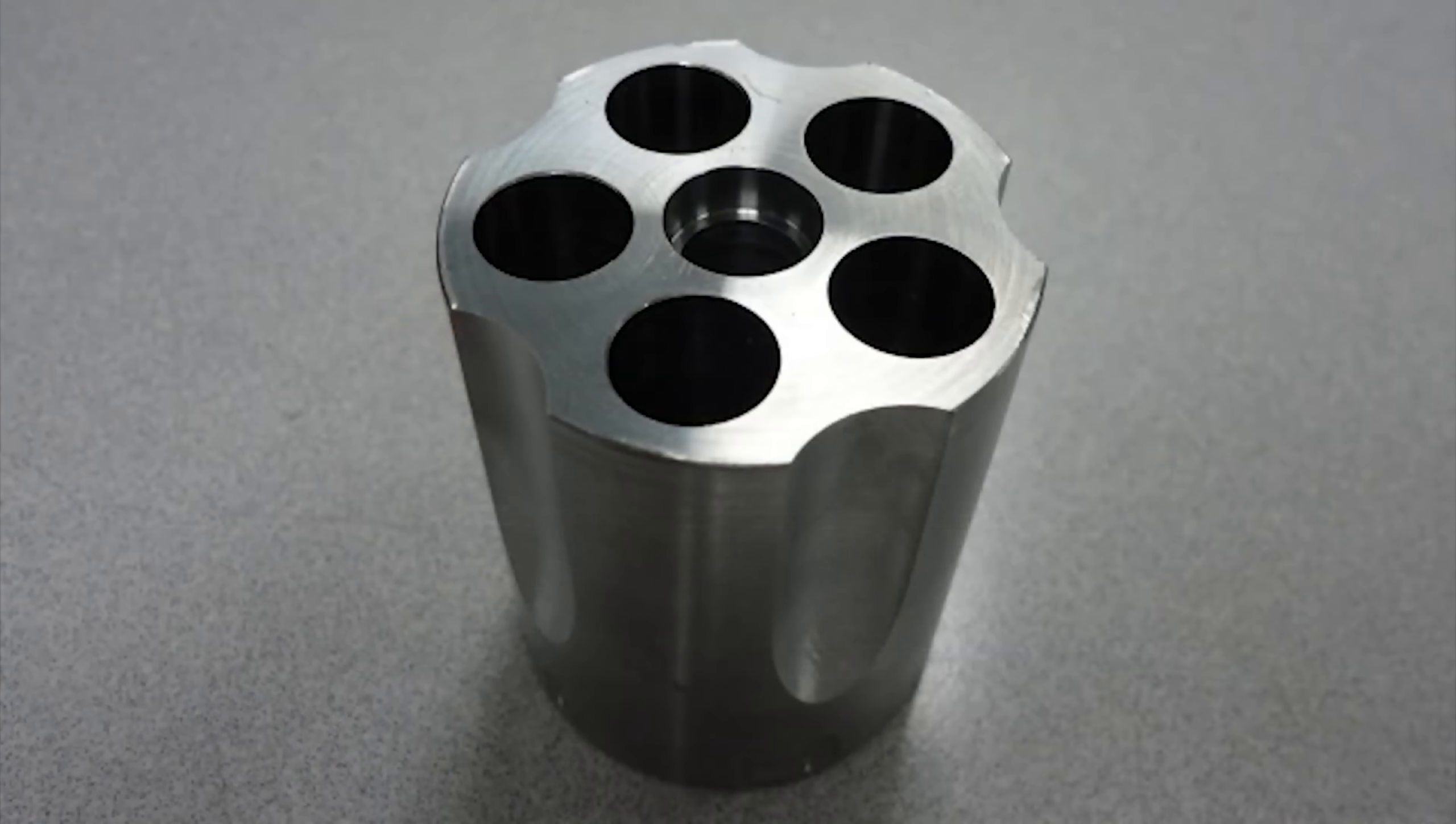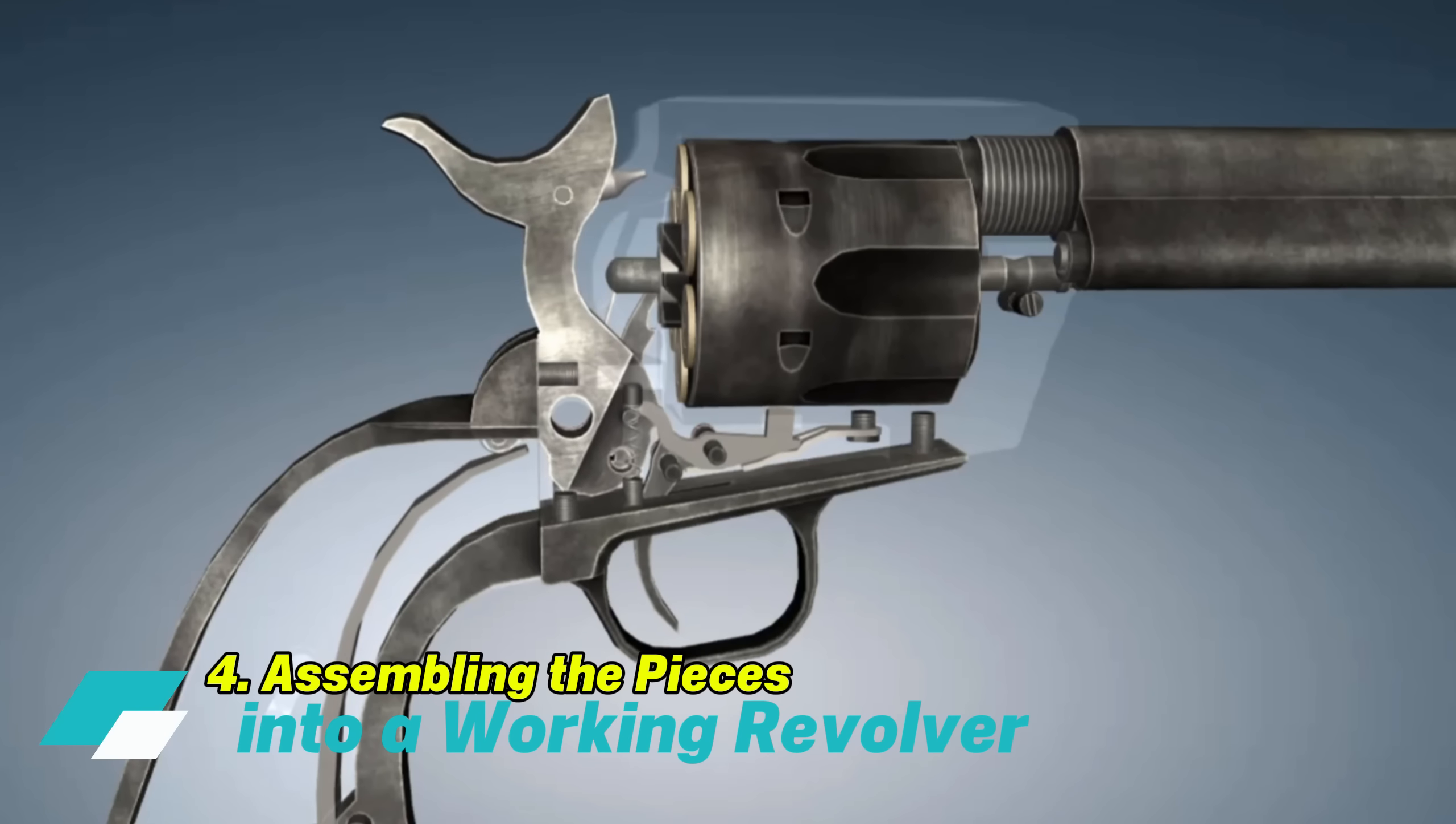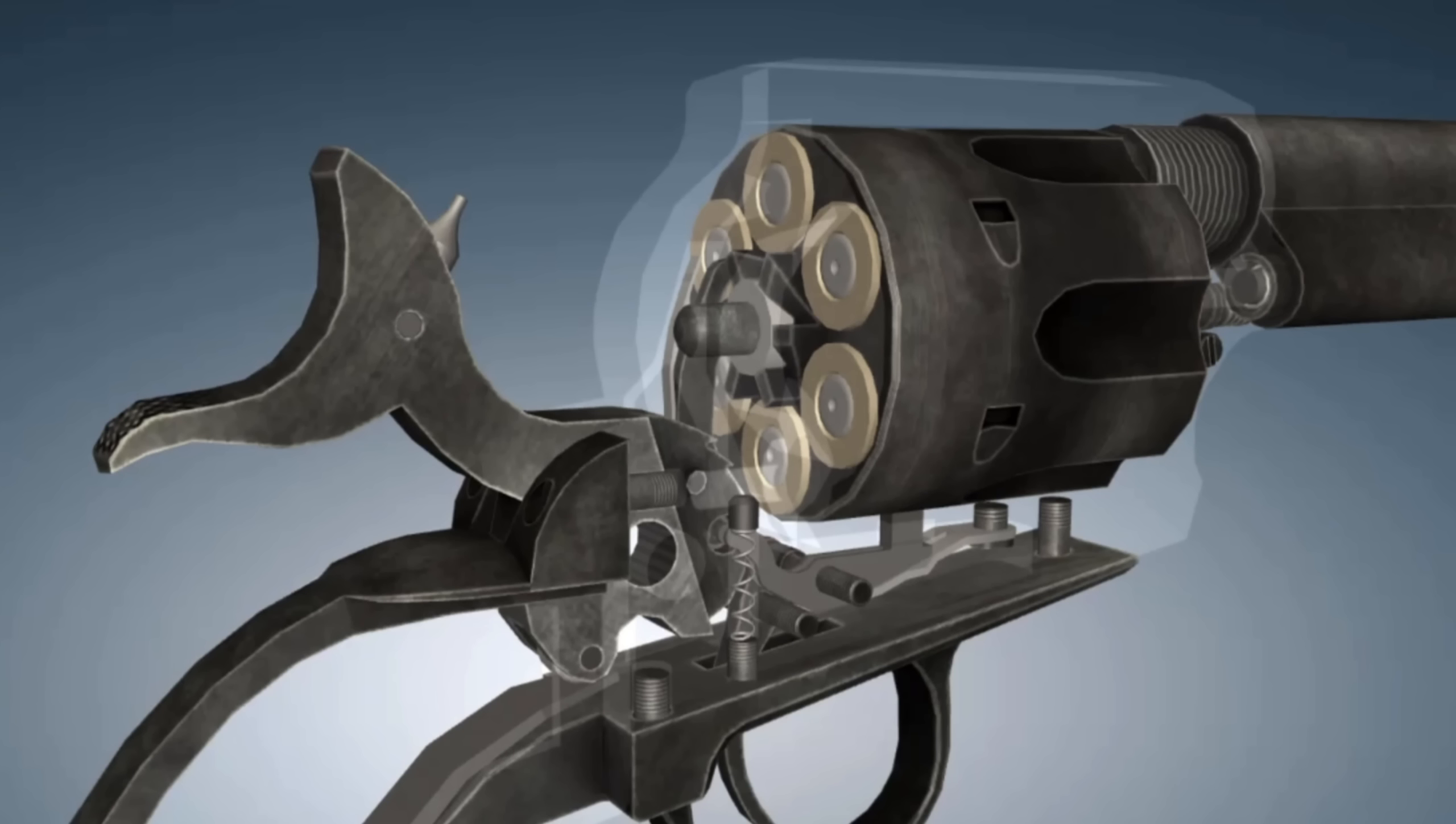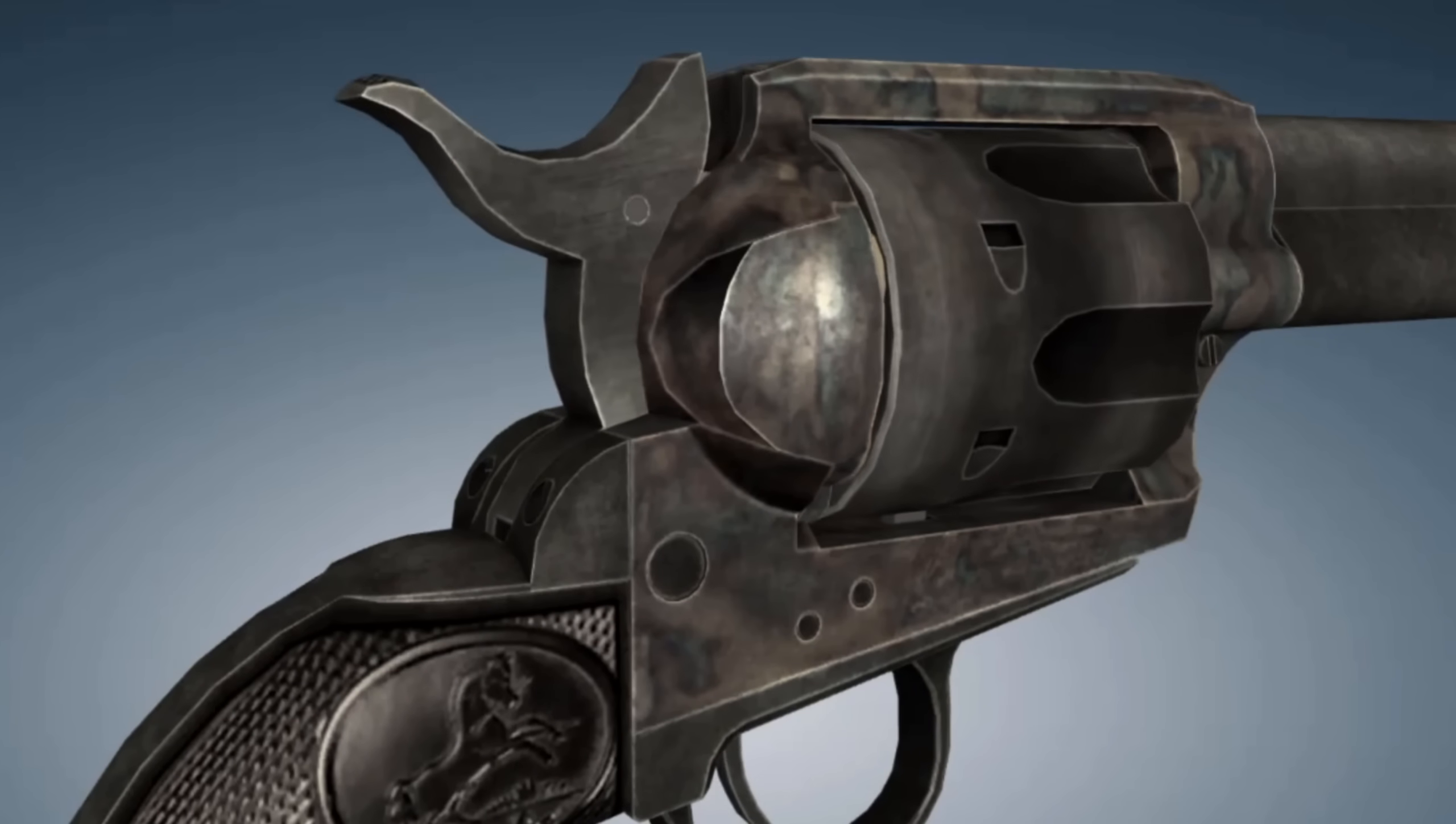With cylinder and frame ready, we'll now see how these precision parts come together on the assembly line. The assembly phase is where everything starts to take shape, as each component is brought together to form a working revolver. This process is all about precision. Every part, from the frame and cylinder to the smallest spring, must fit together exactly as designed.